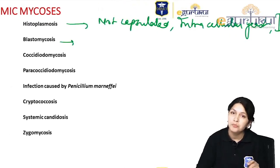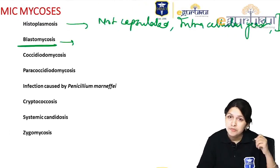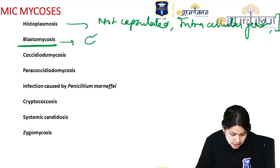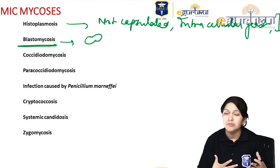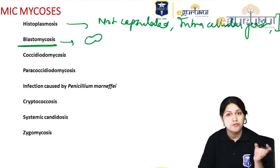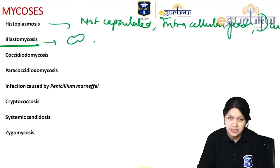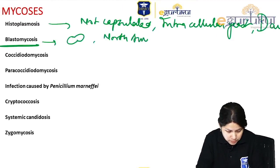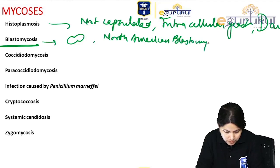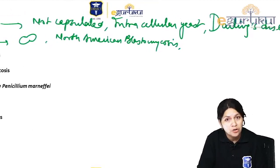In Blastomyces dermatitidis — B for broad — the yeast form typically shows broad-based budding, giving a figure-of-8 appearance from the specimen. The disease is known as North American blastomycosis, Gilchrist disease, or Chicago disease.